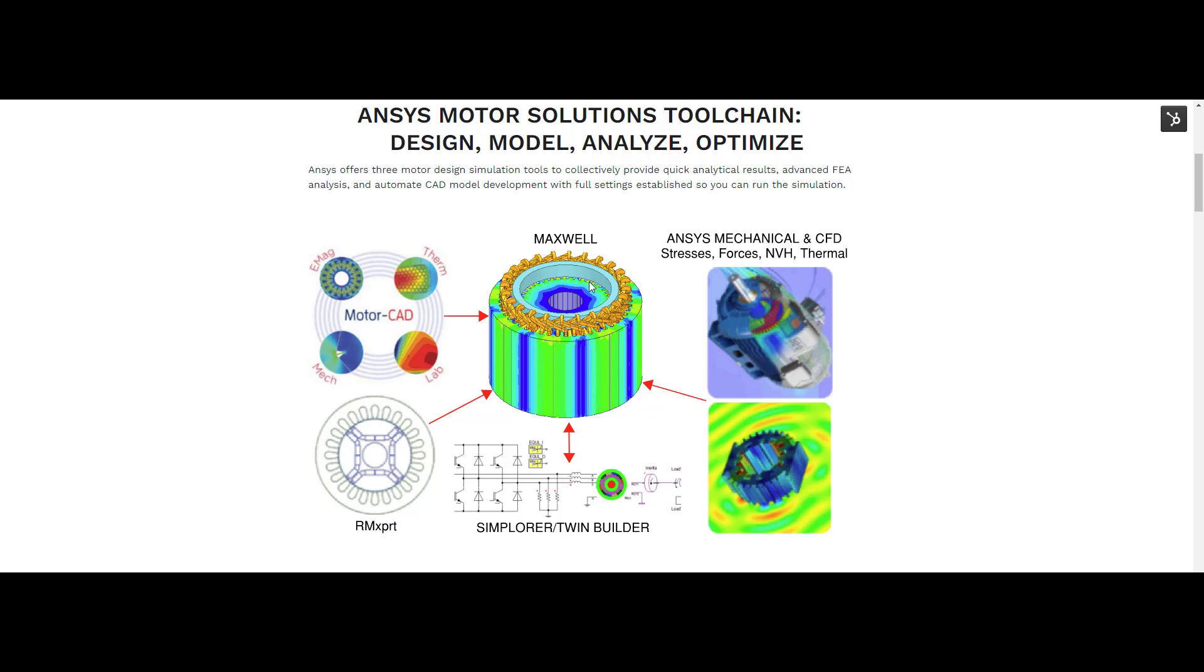After selecting them with motor design in RMxprt, it can be used to quickly and easily develop 2D or 3D FEA models in Maxwell, with all model settings established for boundary conditions, excitations, symmetry, and analysis setup, so that you can just run the Maxwell simulation and post-process results.